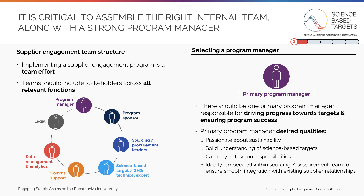To lead your team, it's critical to have one primary program manager who takes responsibility for the program and ensures progress towards the targets. This person should have a passion for sustainability and a knowledge of science-based targets, should have a capacity to take on the increased responsibility of the role, and should ideally be embedded within the sourcing and procurement teams to ensure integration with existing suppliers.